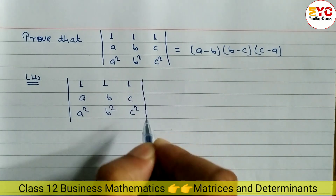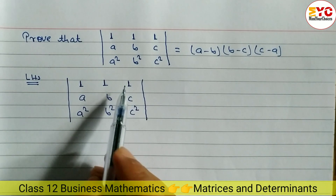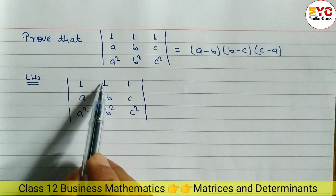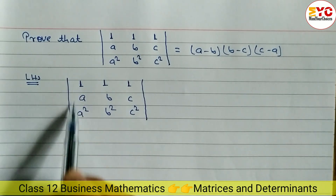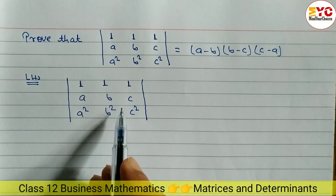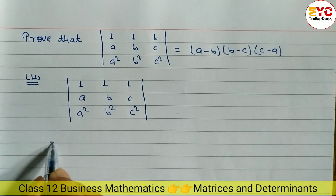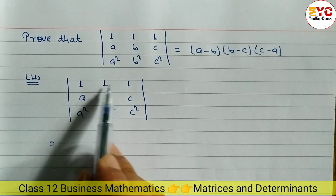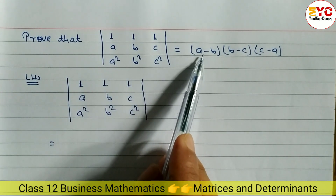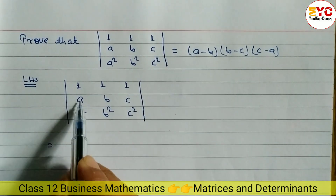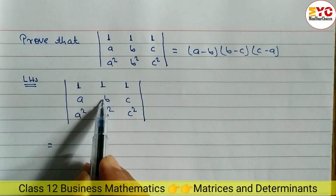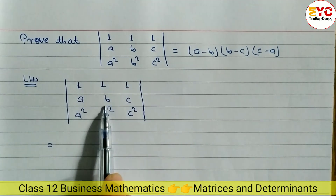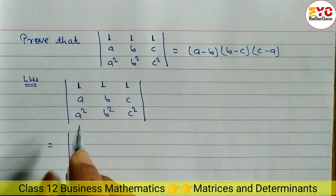In this type of question, either we have to make two elements in a row or two elements in a column equal to 0. Any two elements — if you make them 0, it will be easy to find out the value of the determinant. When you subtract column 1 and column 2, 1 minus 1 gives 0. Again subtracting gives 0. And we need A minus B and B minus C in the RHS.